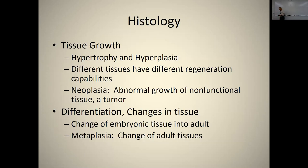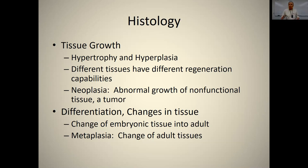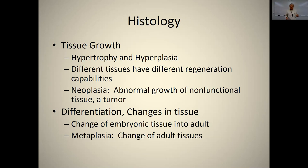Tissue growth: hypertrophy means the tissue gets larger cells, while hyperplasia means getting more cells. When you go to the gym and build muscle, that's hypertrophy — you're making larger cells, not more cells. Different tissues have different regenerative capabilities. You can regenerate liver tissue, but not heart or brain tissue. Smooth muscle can regenerate but skeletal muscle cannot. Neoplasia is abnormal growth of non-functional tissue — a tumor — where cells undergo uncontrolled mitosis. That's cancer.